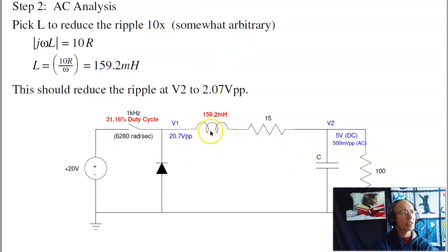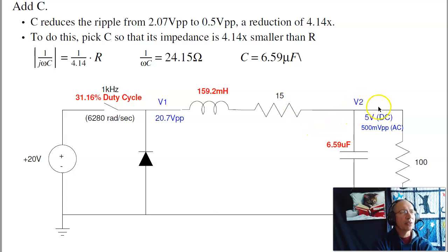For the AC voltage, I've got two degrees of freedom, one constraint. One approach would be, let's just pick the inductor to reduce the ripple by 10 times, so that the 20.7 volt peak-to-peak ripple here becomes 2 volts peak-to-peak at V2. To make the ripple 10 times smaller, the inductor should be 10 times bigger than the resistor, so your voltage division, R1 over R1 plus R2. If this is 10 times R, the ripple will be about 10 times smaller. If the inductor is 10 times the impedance of the resistor, that says the inductor should be 159 mH. To get the capacitor, I now have 2 volts peak-to-peak ripple at V2. I want it to be 0.5. I want to reduce the ripple by 4.14 times. So, I make the capacitor 4.14 times smaller than the resistor. That makes the capacitor minus j24 ohms, and to do that at 1 kHz, the capacitor should be 6.59 µF. So, there's the design.